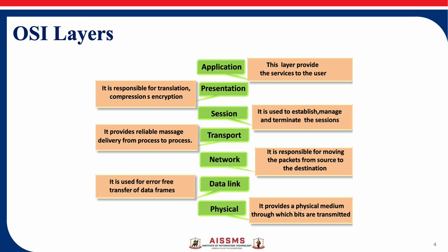The next is the data link layer. It establishes and terminates a connection between physically connected nodes on a network. It breaks up packets into frames and sends them from source to destination. This layer is composed of two parts: logical link control and MAC, that is media access control.